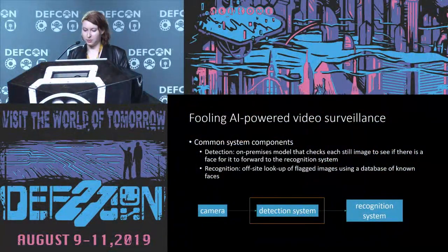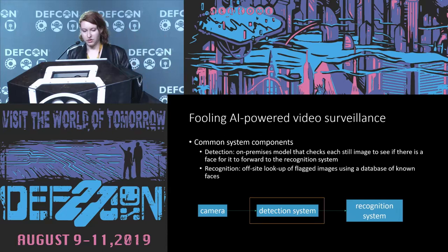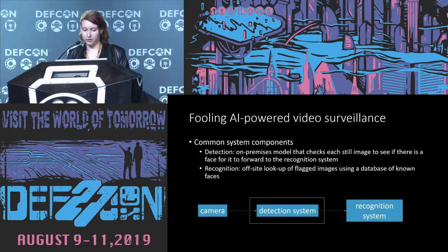Now let's go through one of these attacks as it relates to fooling AI-powered video surveillance — and what I'm going to talk about is actually considered state of the art. The first thing we need to talk about is the data pipeline. The common system components of a lot of these AI-powered video surveillance tools are: a camera system with a bunch of sensors, then a detection system, and then a recognition system. Detection refers to an on-premises model that checks each still image in the video to see if it has a face in it, then forwards frames with faces to a recognition system. The recognition system looks at all of these images and checks them against a database of known faces held by a private entity or law enforcement.